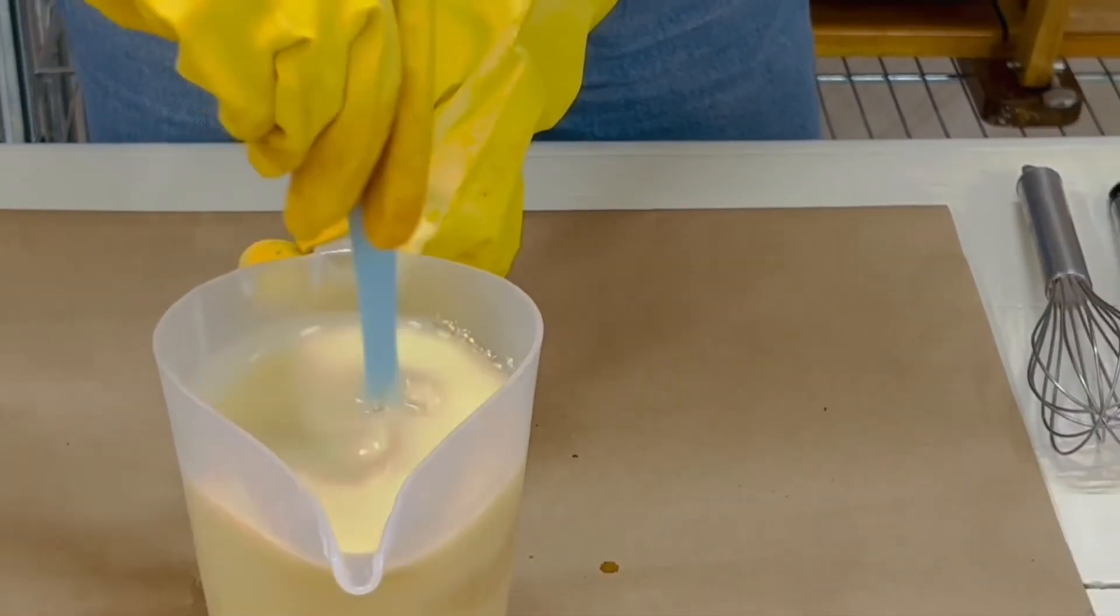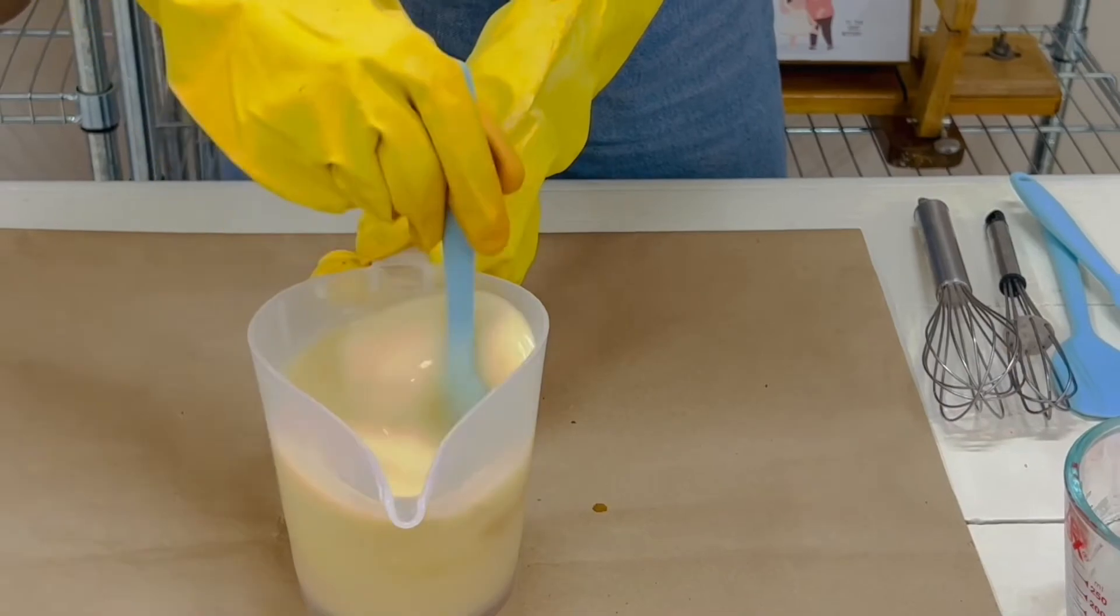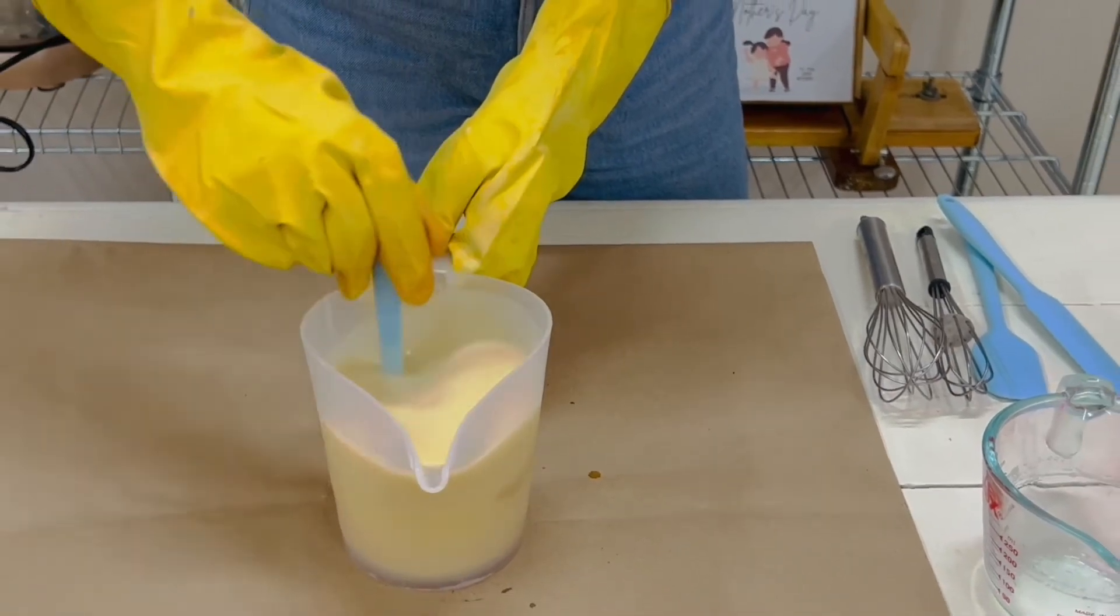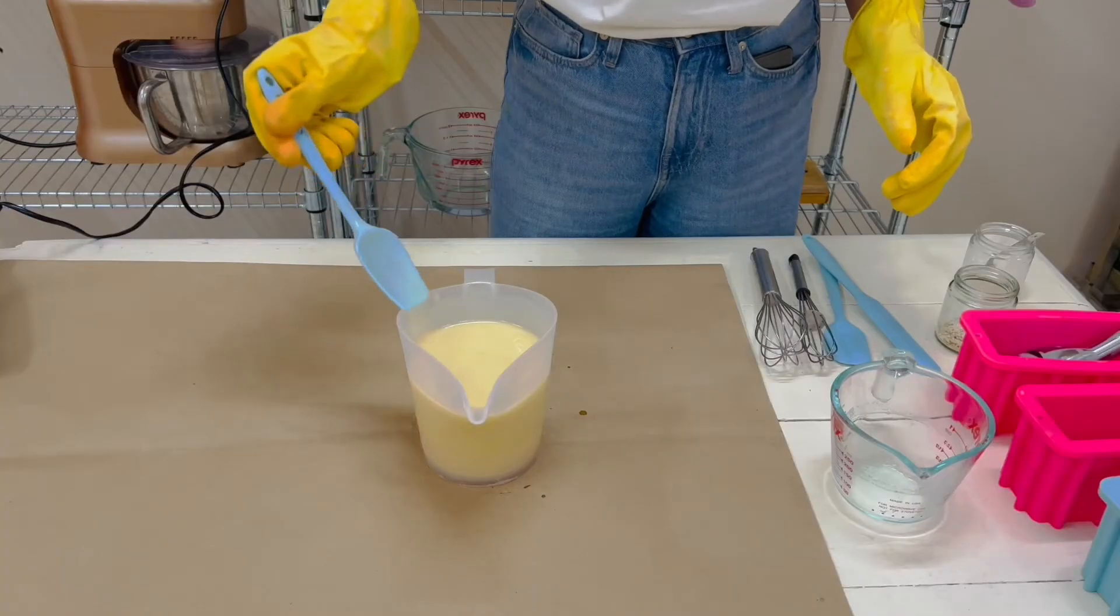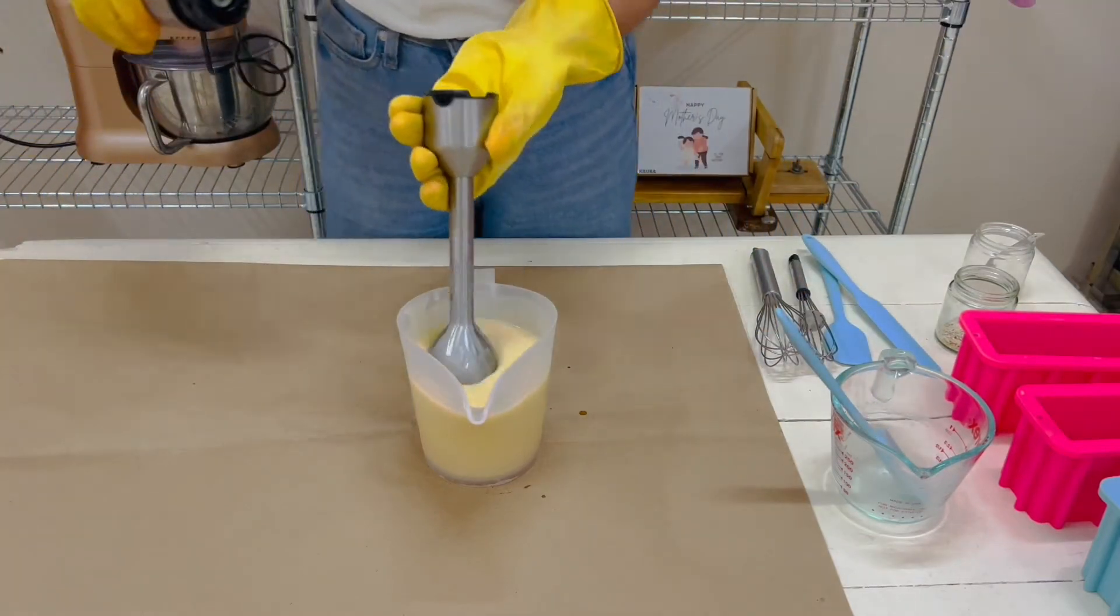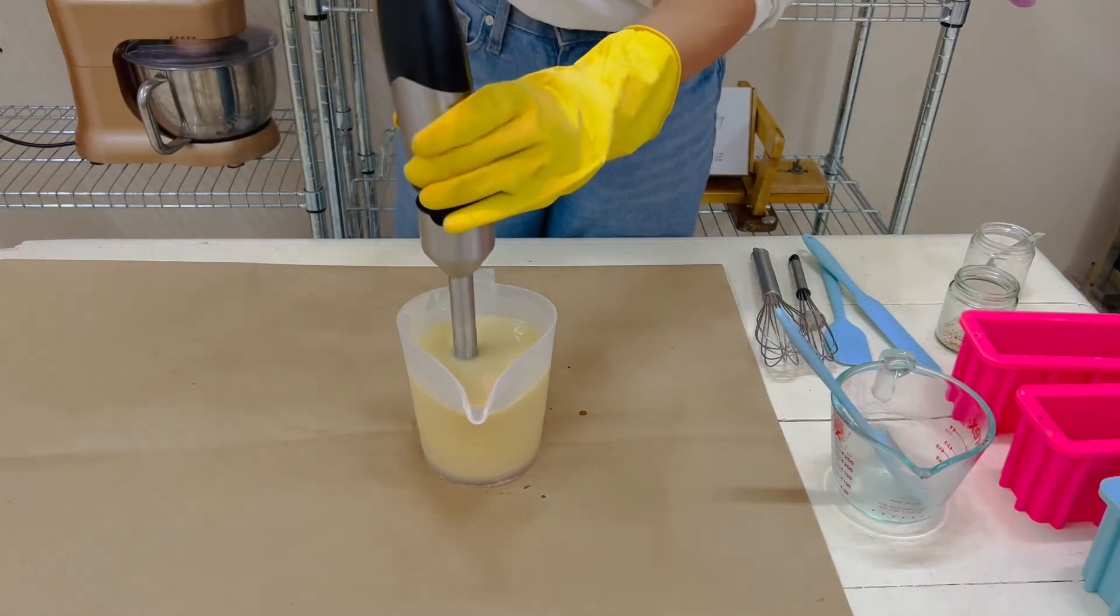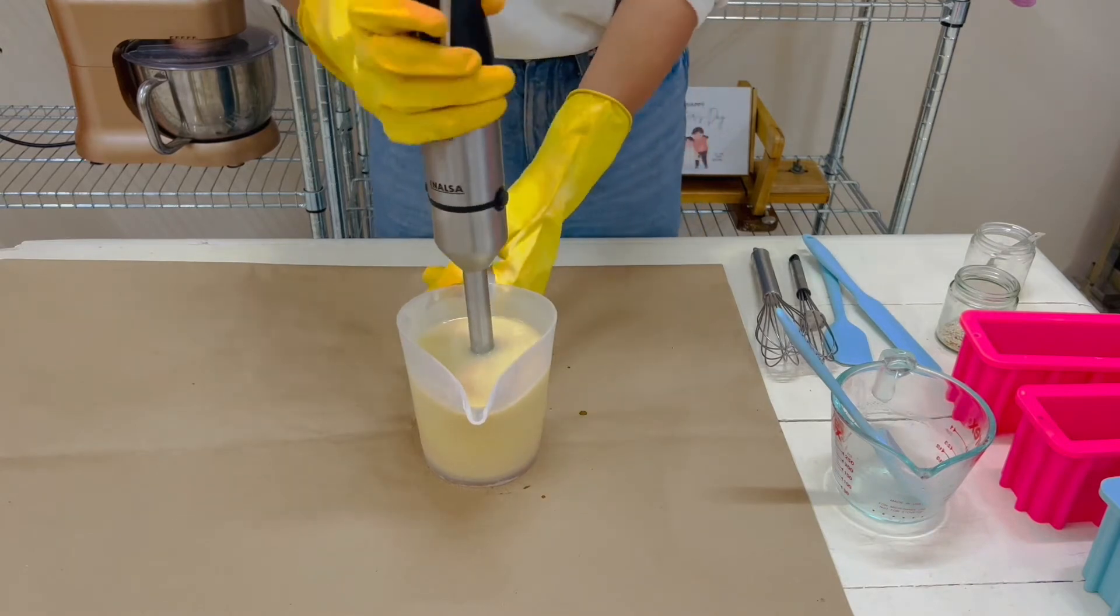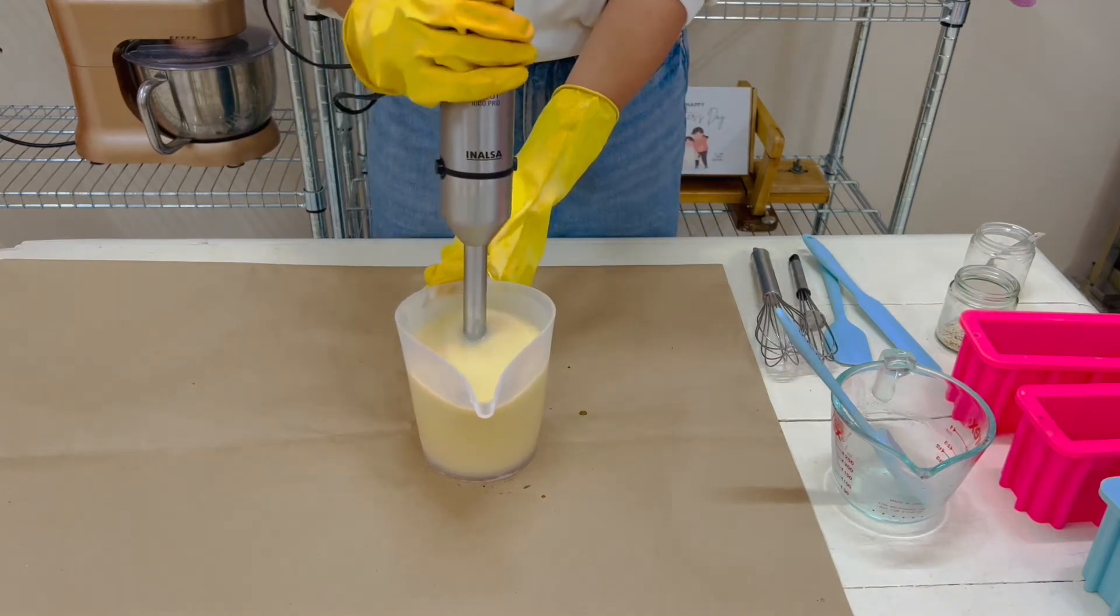Now I'm just going to swirl it so there are no clumps. And we are done. I've got this soap to the trace. Trace means where the lye and oils are not separating. If you're someone new who wants to make soap, this is a really easy video for you.